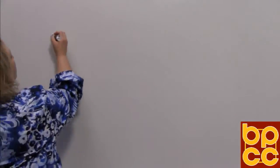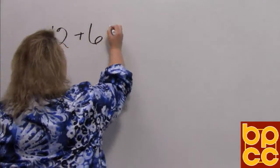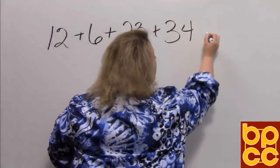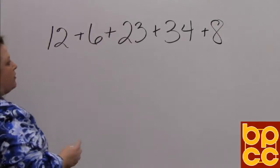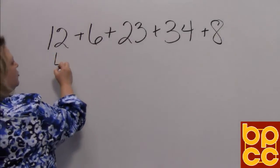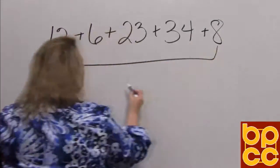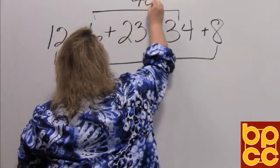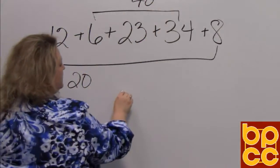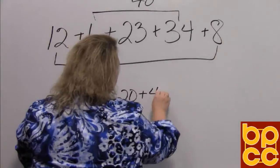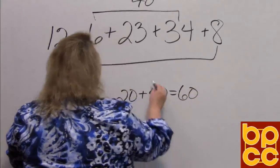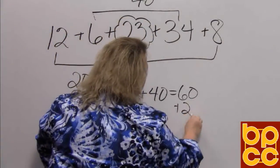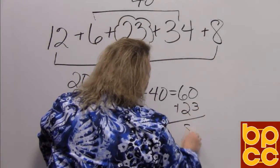So when you have twelve plus six and twenty-three, thirty-four and eight, we want to try to add our groups together for compatible numbers again. So this is twelve and eight, which would make twenty this time, and then six and thirty-four would make forty. When you put those together, twenty plus forty, that gives you sixty. Now all you have to do is add the twenty-three that is in the middle, and that gives us eighty-three.